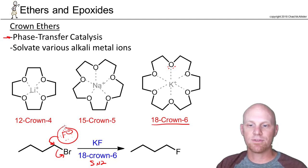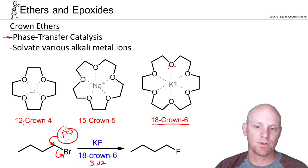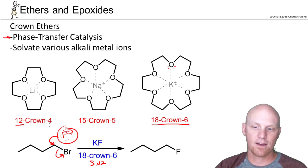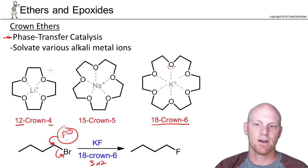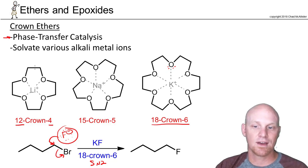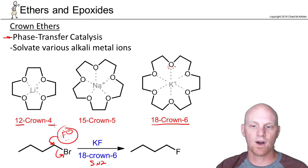These are called crown ethers because they kind of look like a crown. In terms of naming, the first number is the total number of atoms — both carbons and oxygens — in the ring, and the last number is simply the number of oxygens. So in this first one, we've got 12 total atoms — 8 carbons and 4 oxygens — making it 12-crown-4.